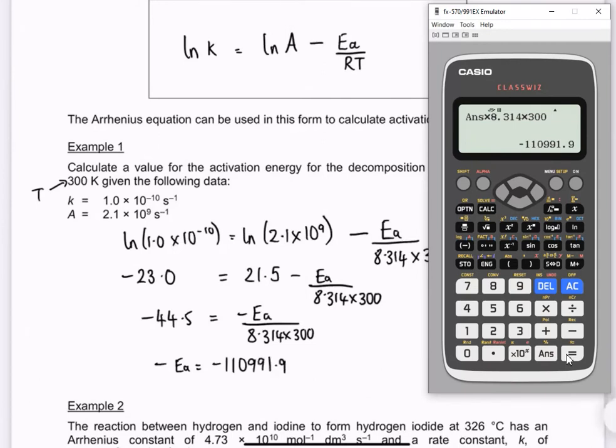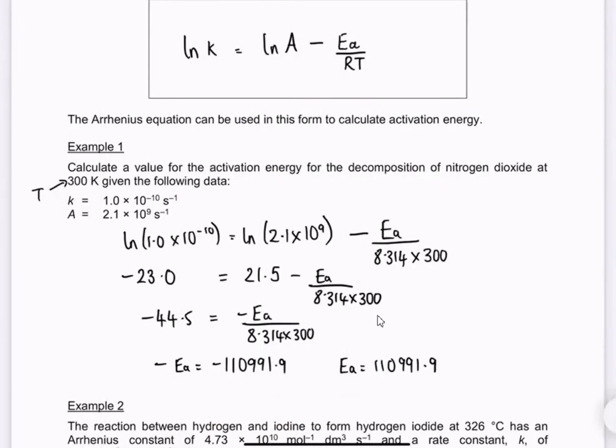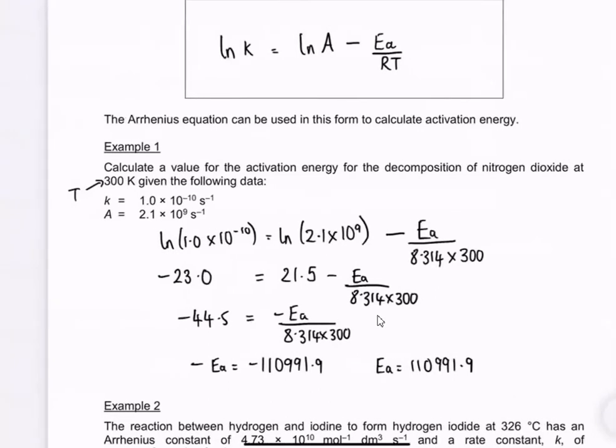Now that's probably way too many significant figures, but we'll sort that out in a minute. Now because they're both minus, I can just say Ea equals 110991.9. But that, and we've worked it out like that, is going to have come out in joules per mole.